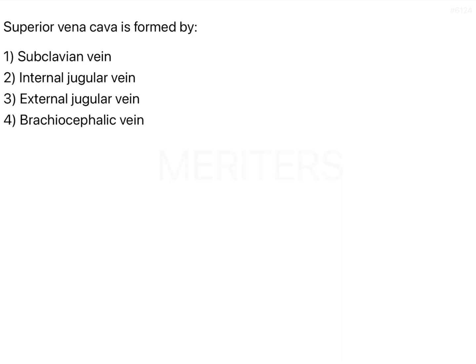First of all, we should understand the venous supply starting from the Superior Vena Cava. In this illustration, the Superior Vena Cava branches into the right brachiocephalic vein and the left brachiocephalic vein.